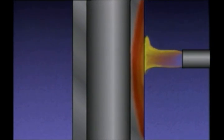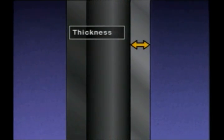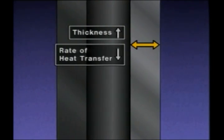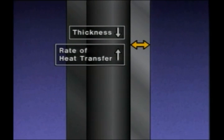Those four factors are: the thickness of the material, the temperature difference across the material, the surface area over which the heat is applied, and the material's thermal conductivity. In the case of a tube, thickness refers to the distance from the outside wall to the inside wall. As the thickness increases, the rate of conduction heat transfer through the wall decreases, because the distance the heat must travel is increased. As thickness decreases, the rate of heat transfer increases.